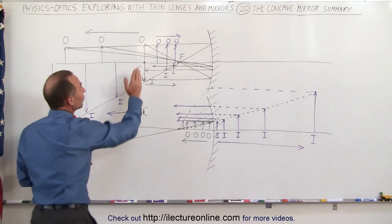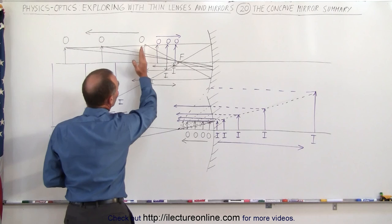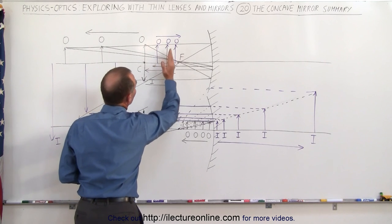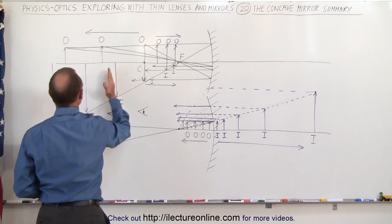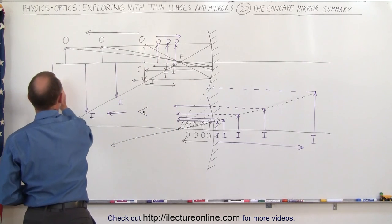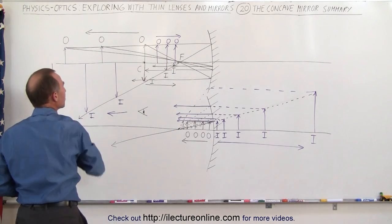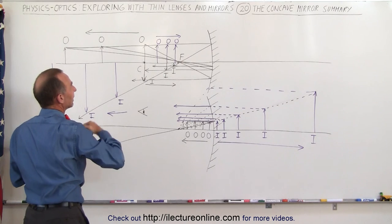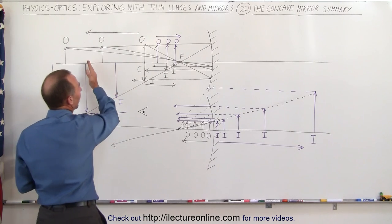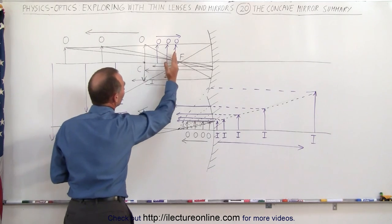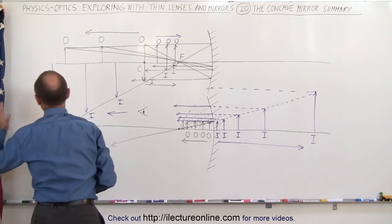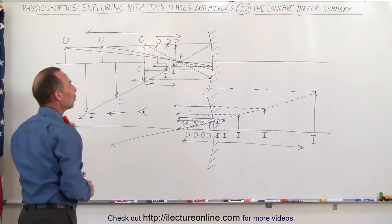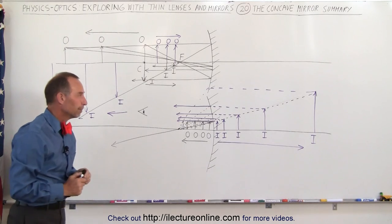Instead, if we move the object closer to the focal point, then the image will form farther and farther away from the mirror. In the limit, as the object reaches the focal point, the image will be at infinity away from the mirror.